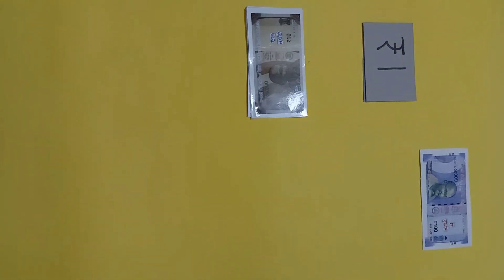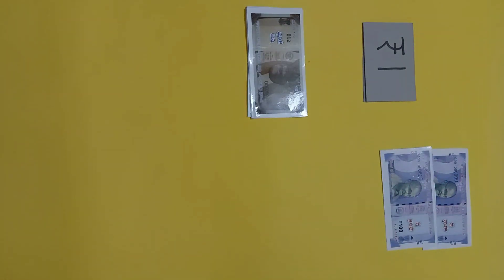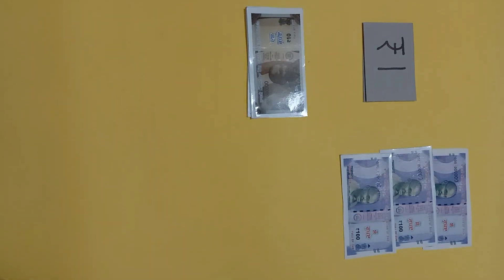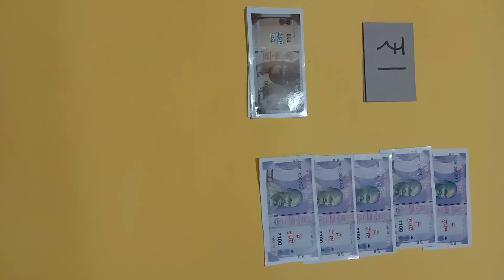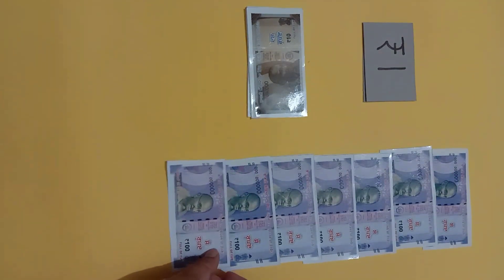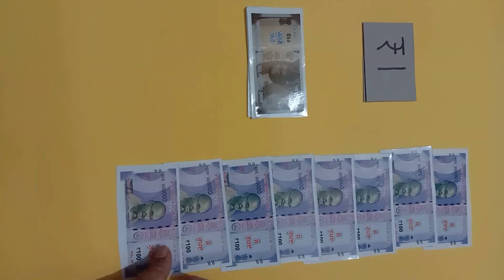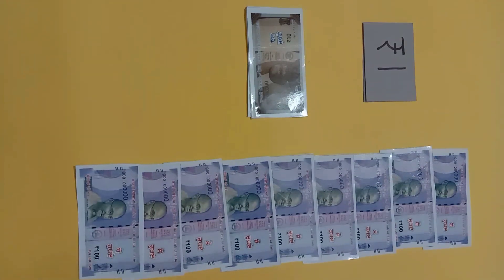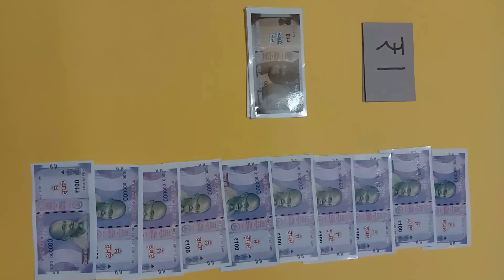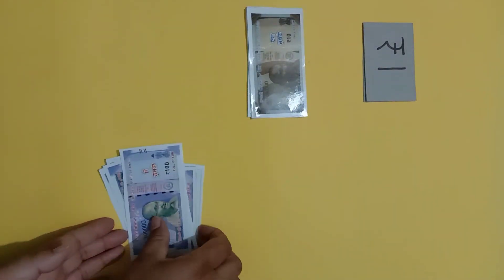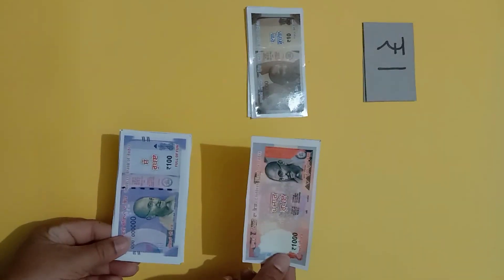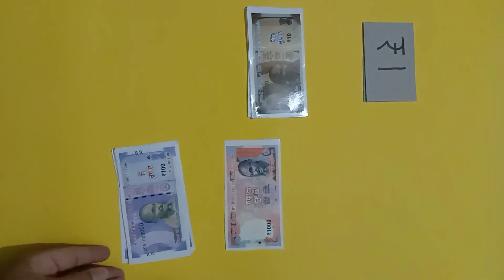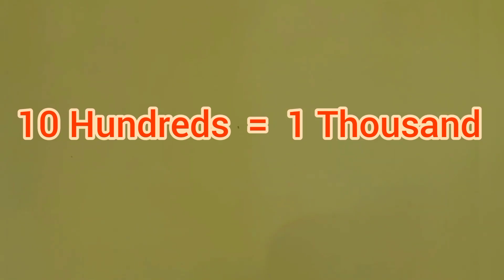One hundred, two hundred, three hundred, four hundred, five hundred, six hundred, seven hundred, eight hundred, nine hundred and one thousand. These are ten notes of hundred rupees, equal to the value of one note of rupees one thousand. We can say ten hundred is equal to one thousand.